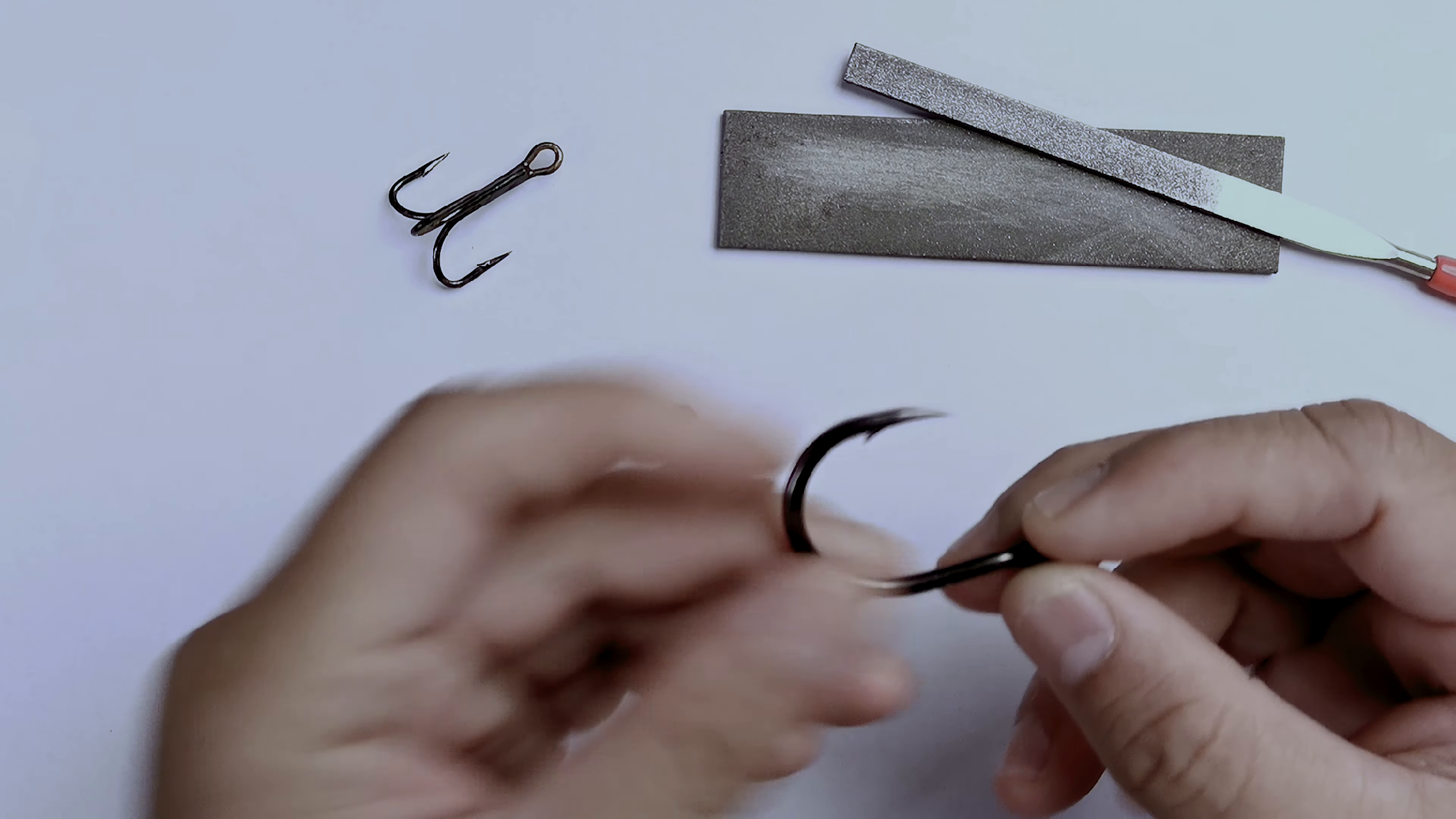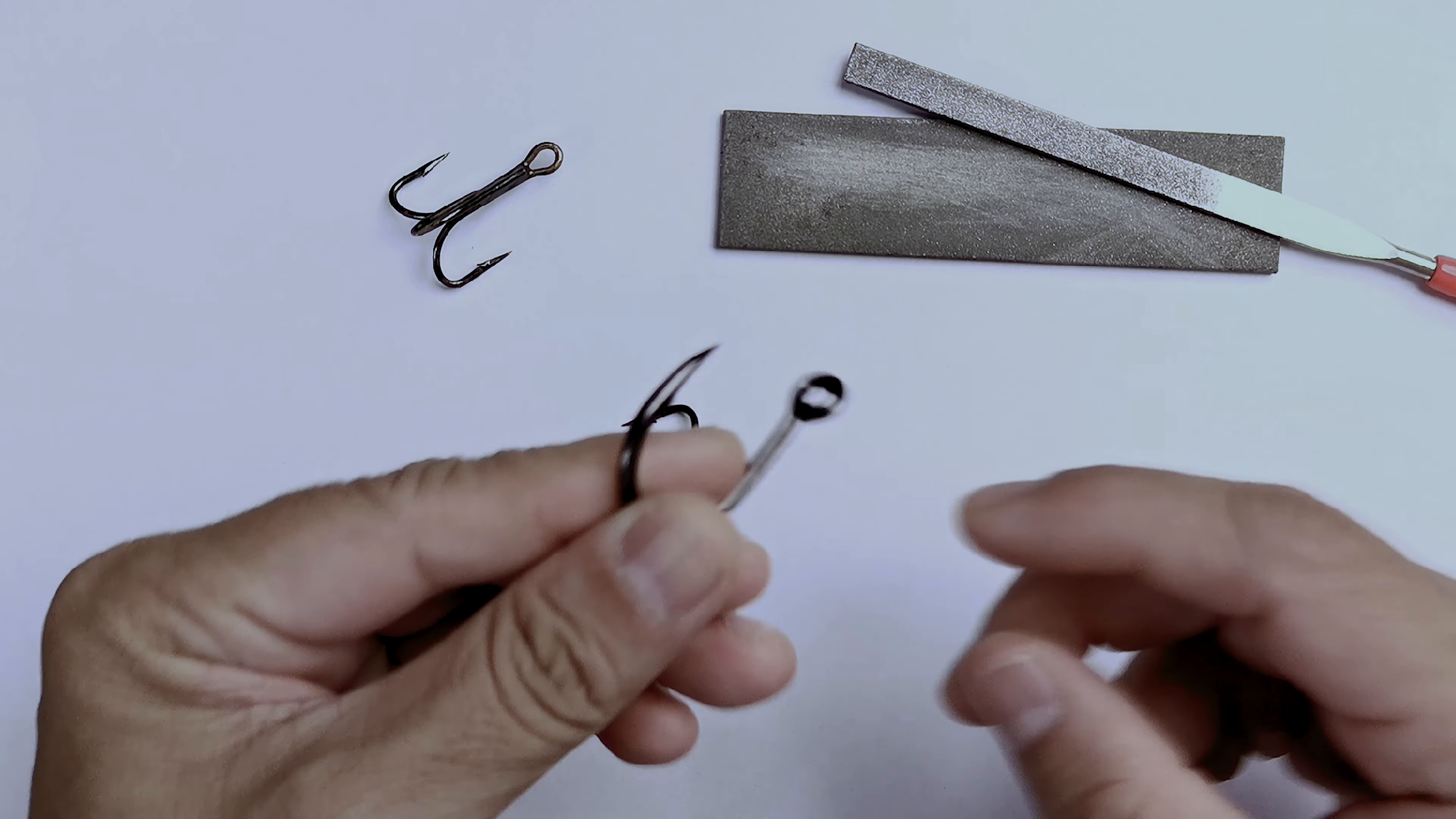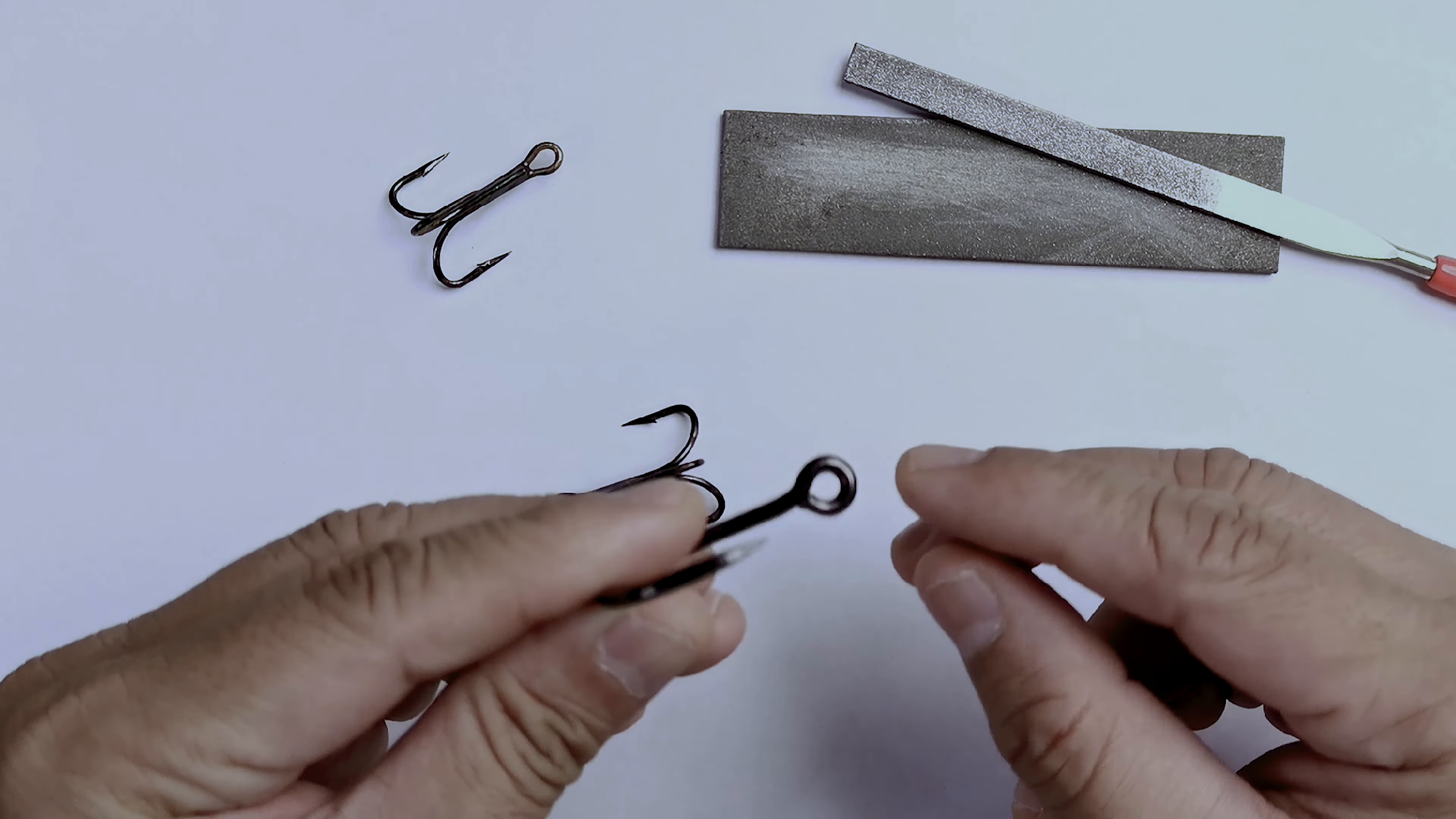Now, here's an example of a jigging hook that I took the assist cord off of, but I've used this before. Now, I took this off because it's a very good example. What it is, is that it's snagged once, okay?